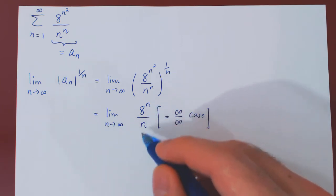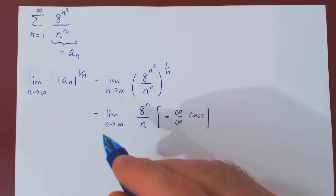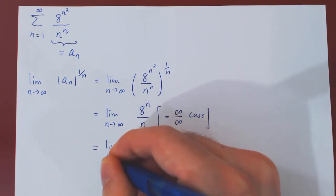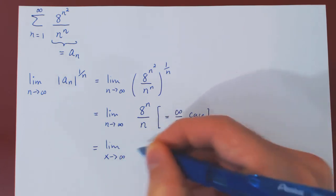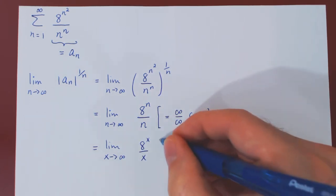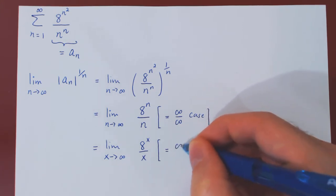So, I'll simply, before using L'Hopital's rule, I'll replace the discrete variable n by the continuous variable x. So, 8 to the x over x. Again, we have an infinity over infinity case, and now we can apply L'Hopital's rule.